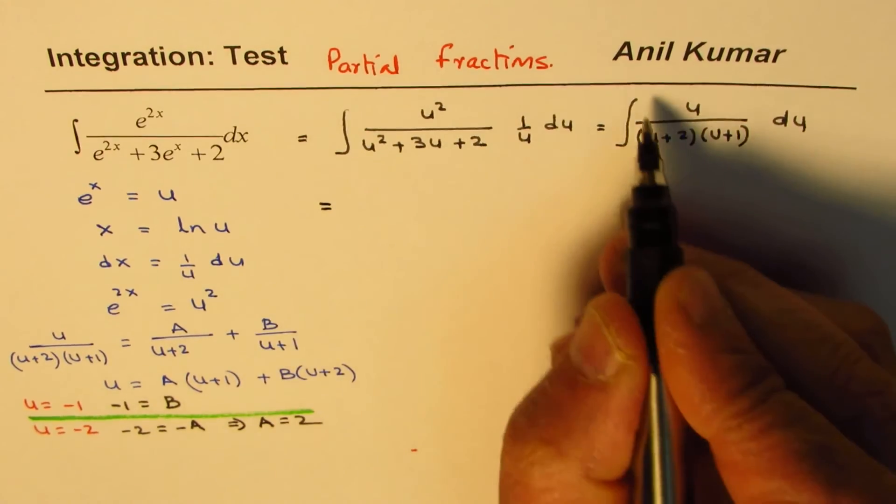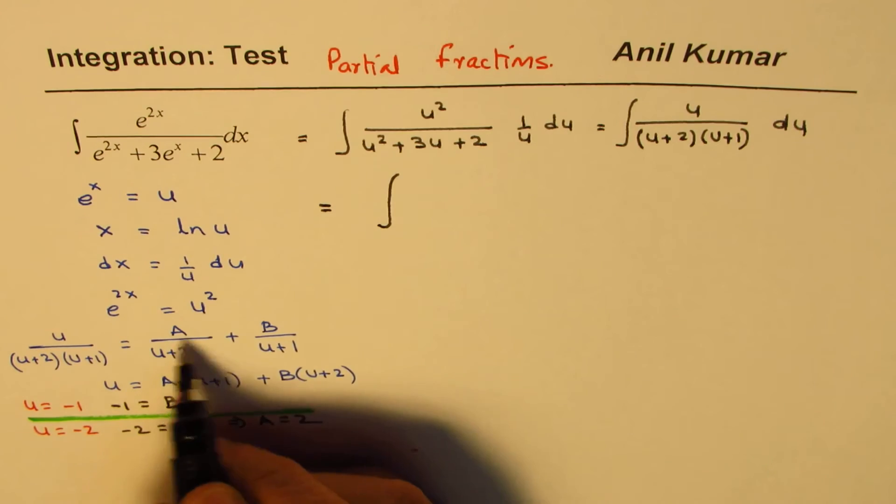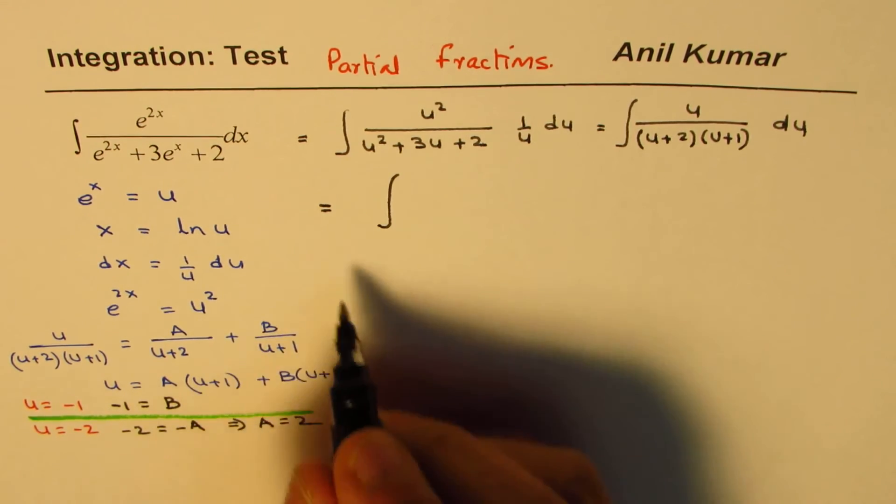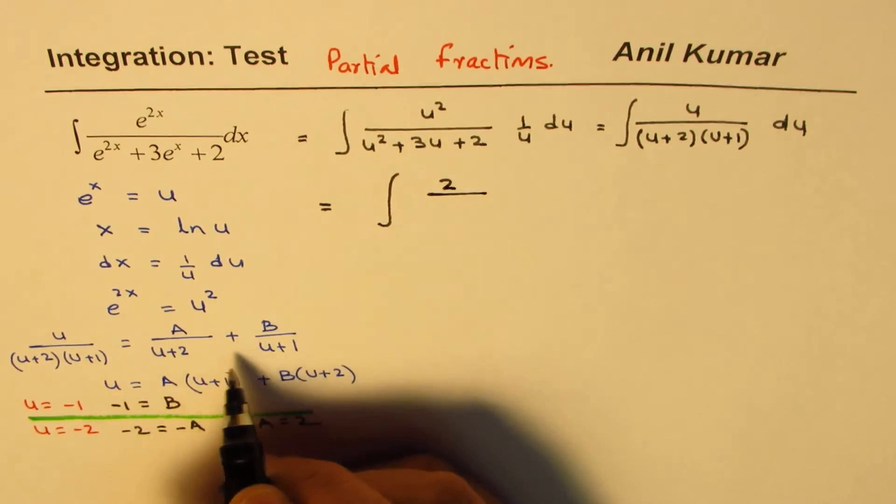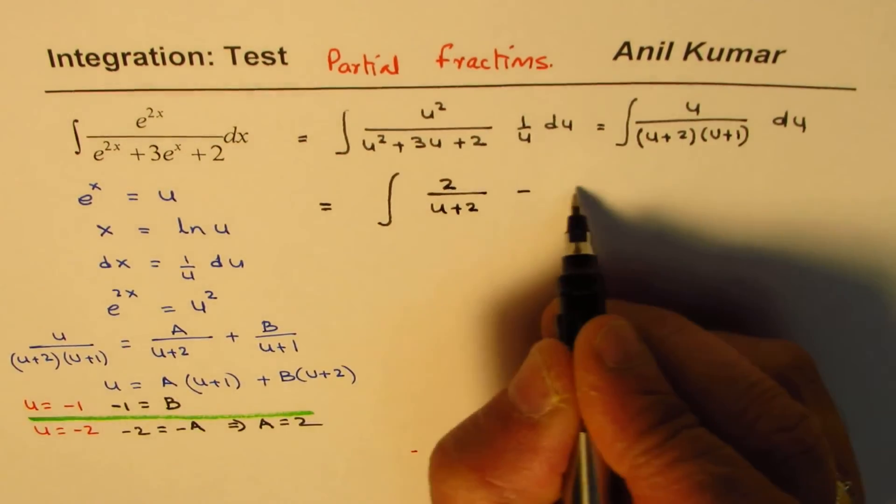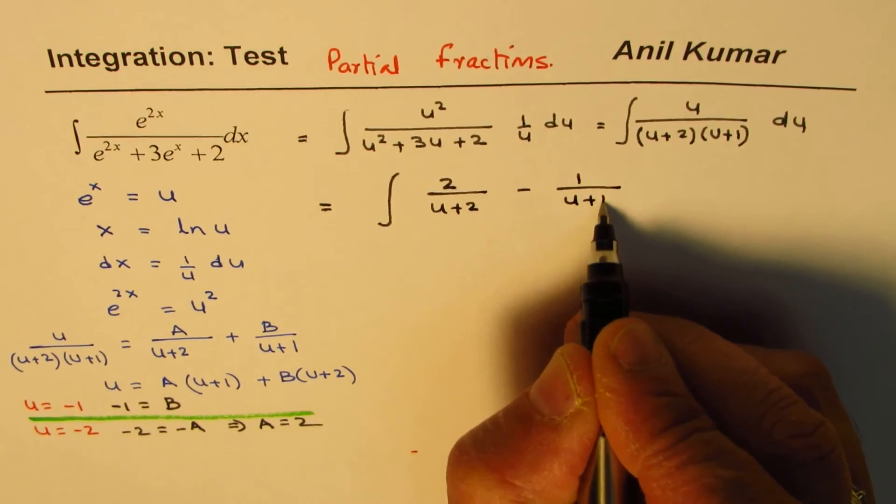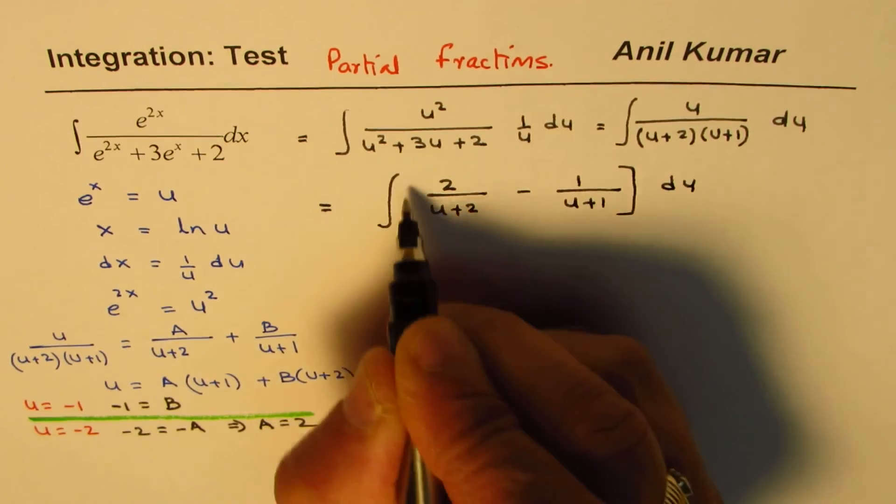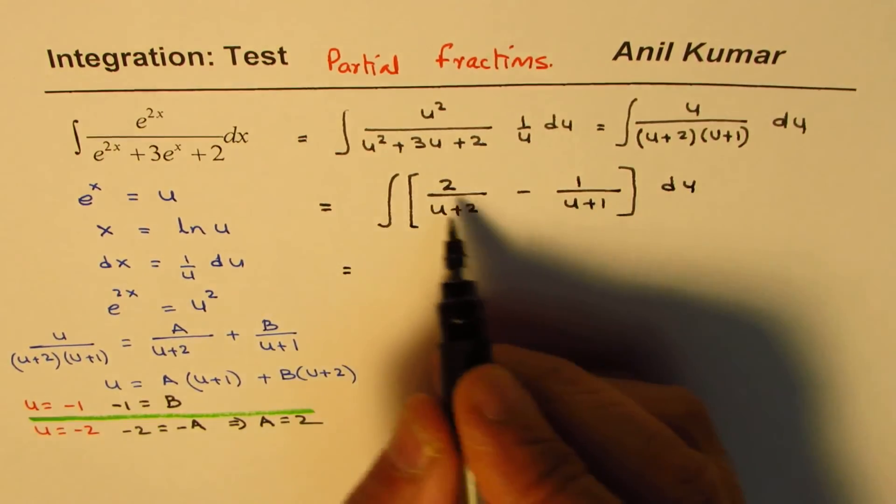Once we get that, we will write this integral as this. Partial fractions. So A is 2, so we get 2 over u plus 2 minus 1 over u plus 1, du. That is how we could simplify, and now it's kind of simpler.